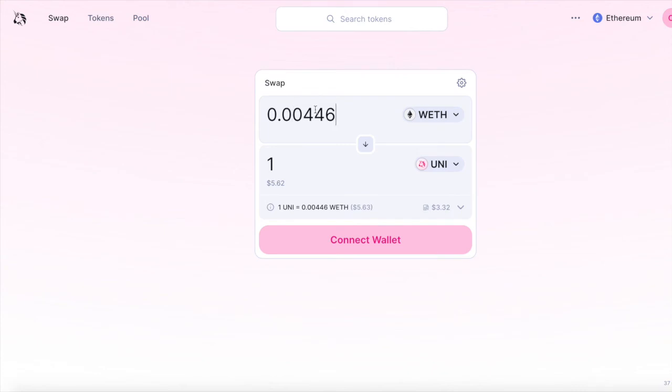We'll change the top to wrapped ether and the bottom to Uni, and we'll say one, and that gives us 224.092. And if we were using the current square root ratio x96, our calculation would give us exactly this number.